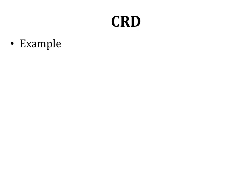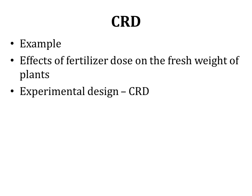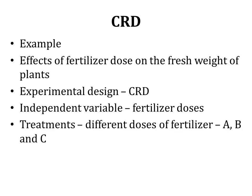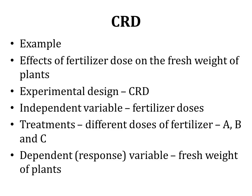Let's work through an example: the effects of fertilizer dose on the fresh weight of plants, using CRD. The independent variable is fertilizer doses, and treatments are three different doses — A, B, and C. The dependent variable (response variable) is the fresh weight of plants. We manipulate the independent variable to define different treatments, apply them to the experimental units (plants), and measure the response variable — fresh weight — after the experiment is complete.